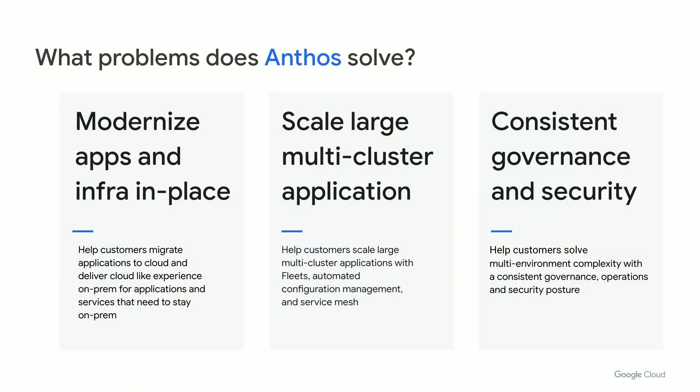So what problems does Anthos solve? Number one, it helps you modernize apps and infrastructure in place. Next, it helps you scale large multi-cluster applications — this is one of the top concerns from customers who've deployed Kubernetes at scale. Number three is to bring consistent governance and security in all environments. Our customers identify this as one of their top challenges.